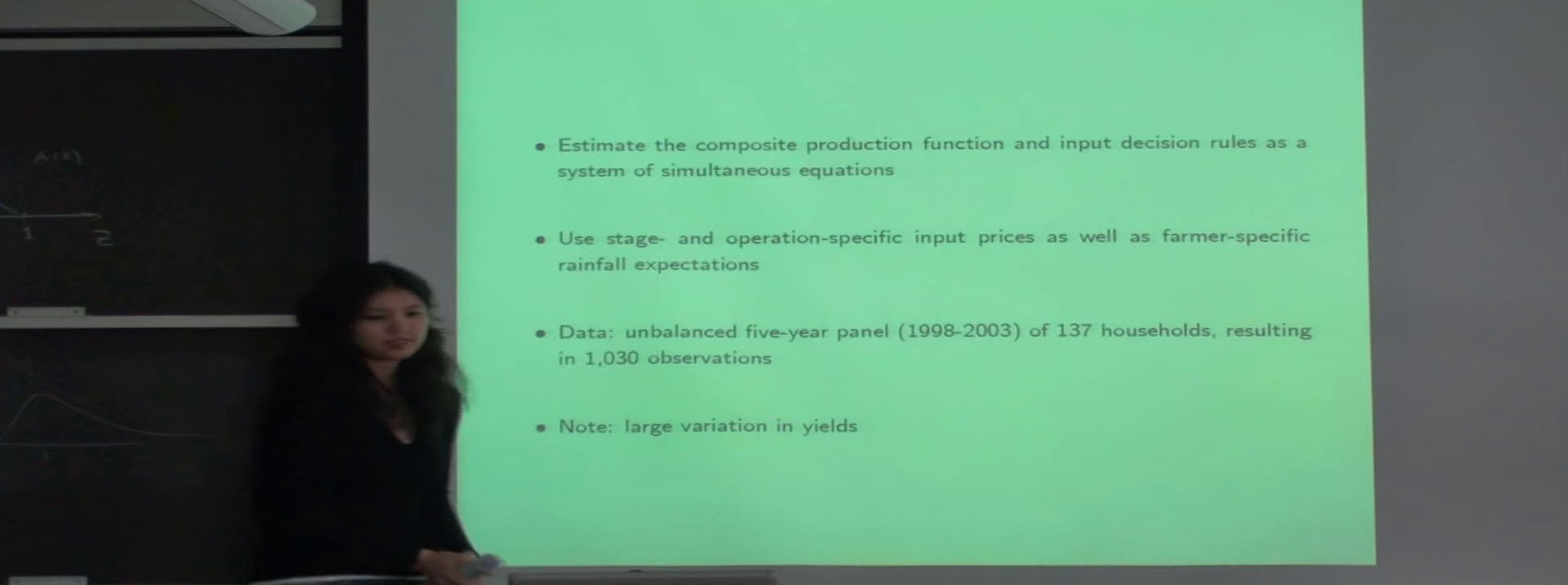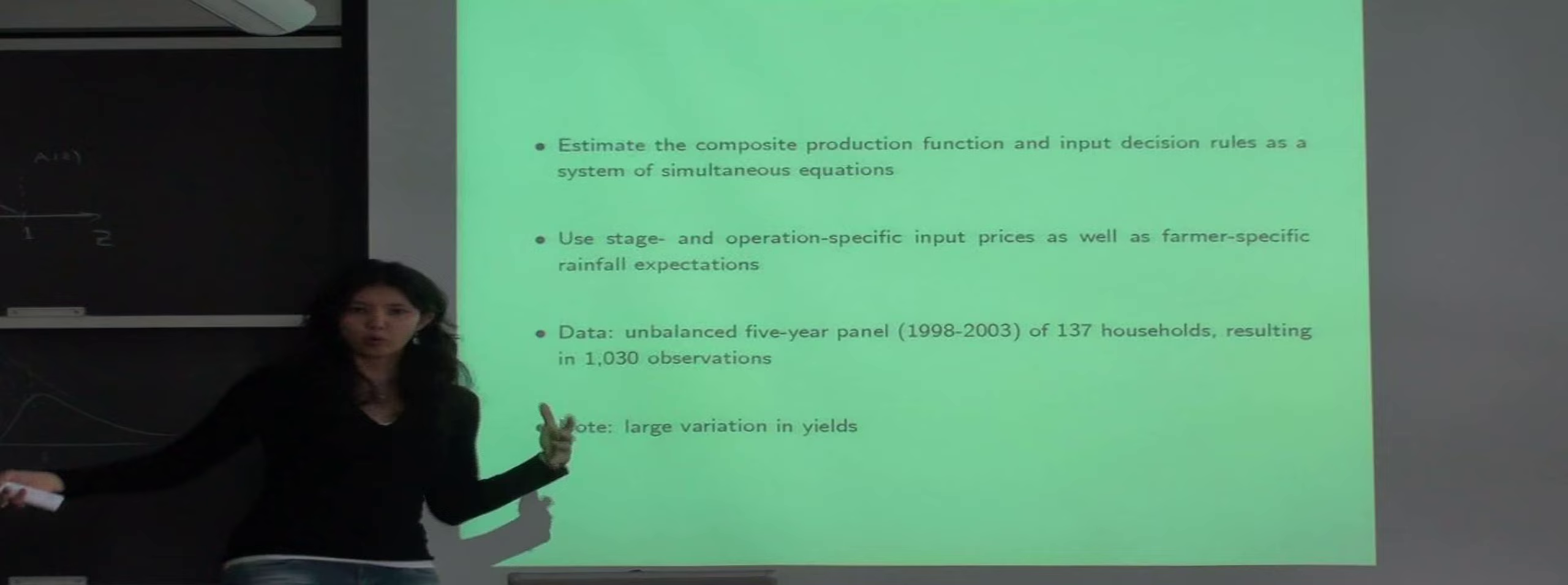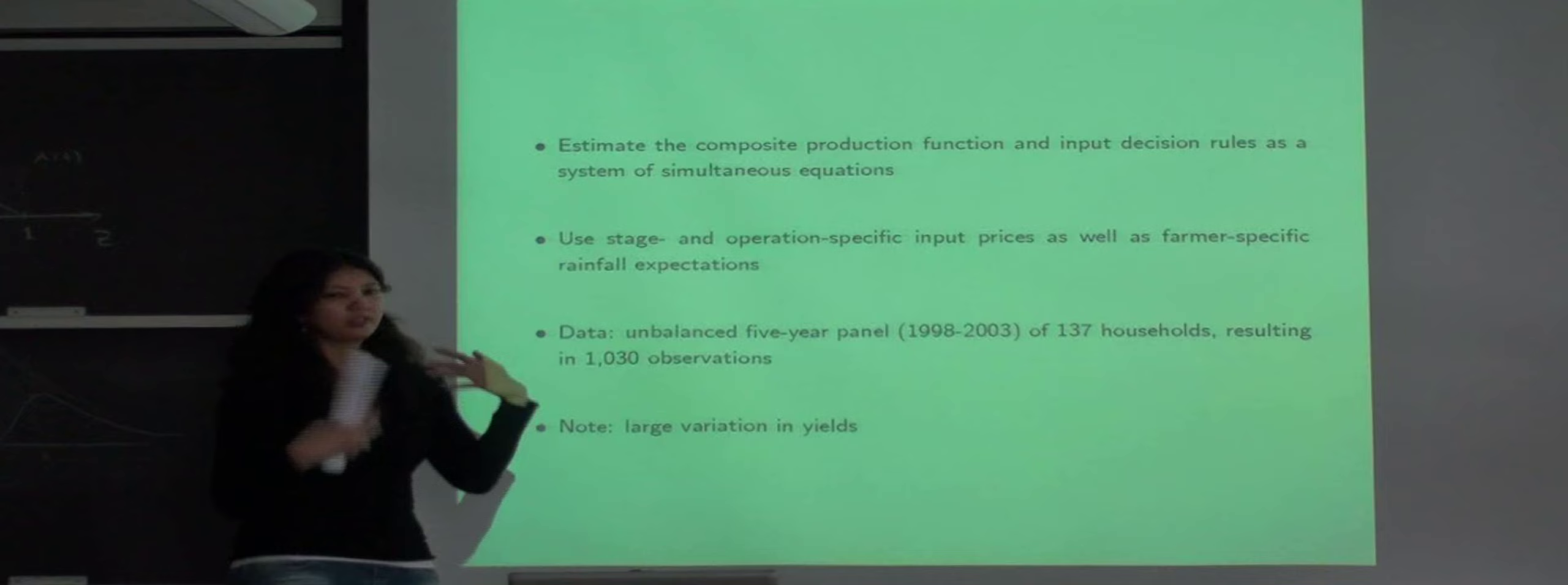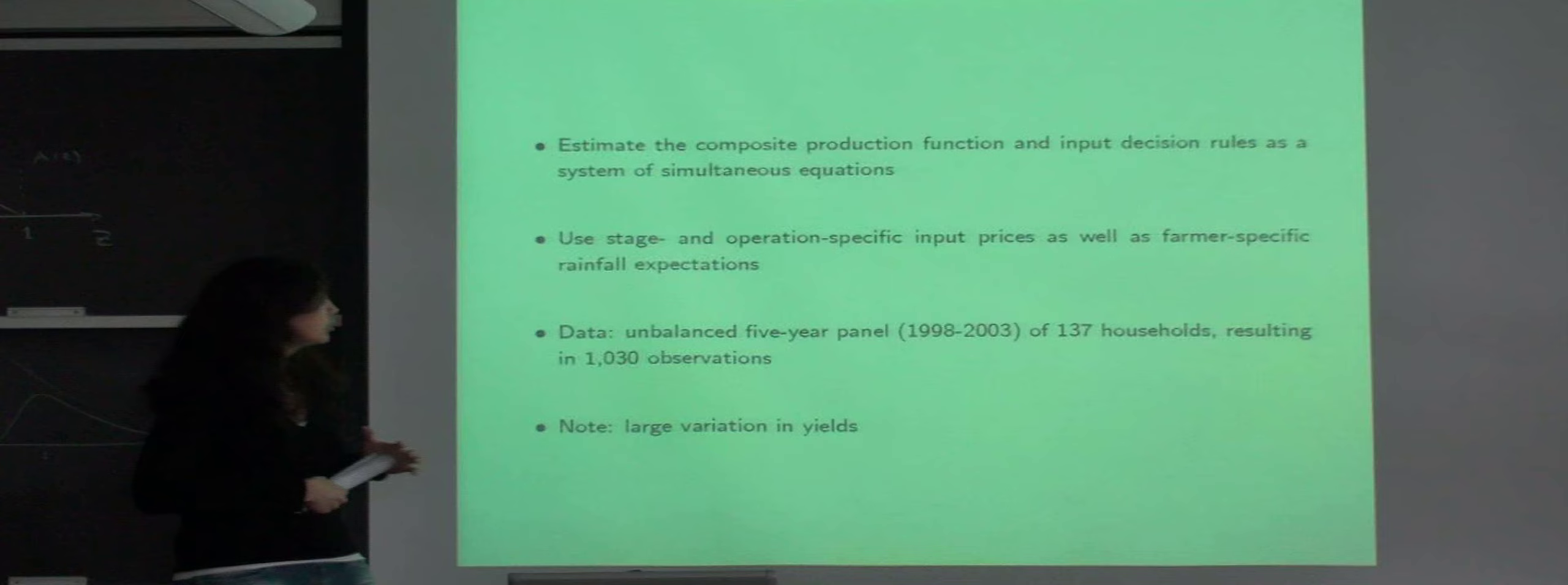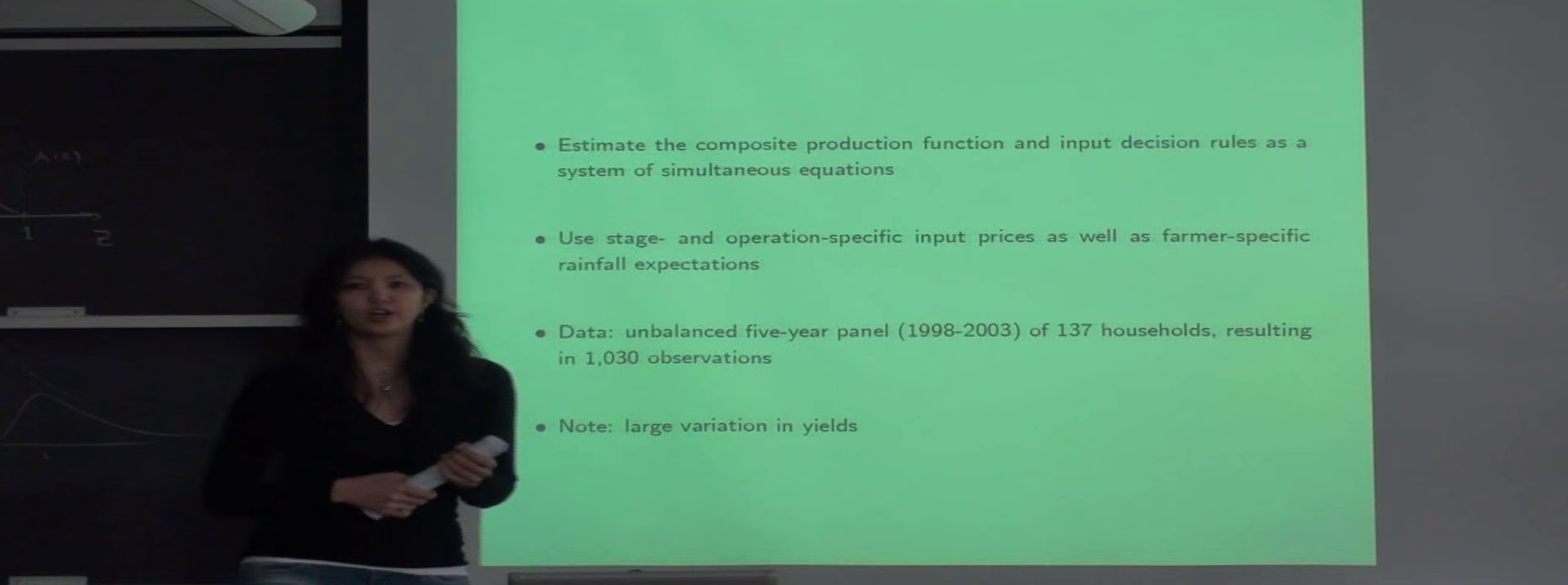We estimate our model as a system of simultaneous equations which includes a composite production function, which is yield as a function of all inputs throughout all stages. Our system also includes equations for input decision rules at each stage. In our estimation we use stage and operation-specific input prices as instruments, and we also use farmer-specific arrays for expectations.